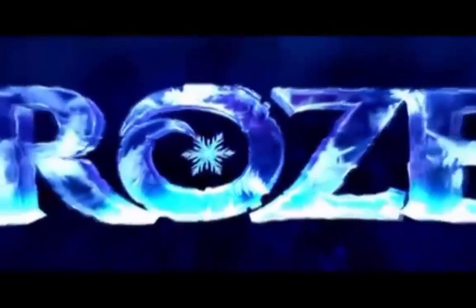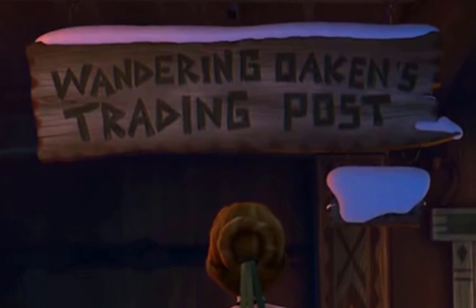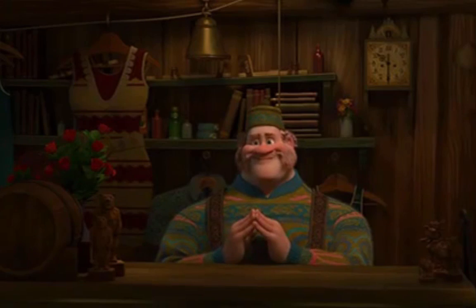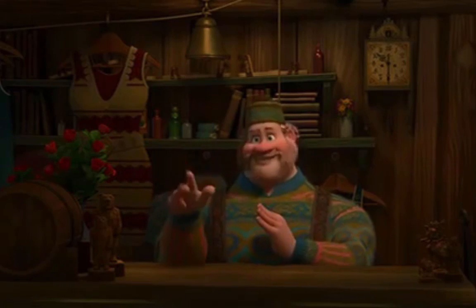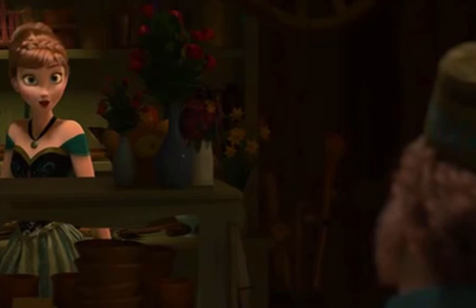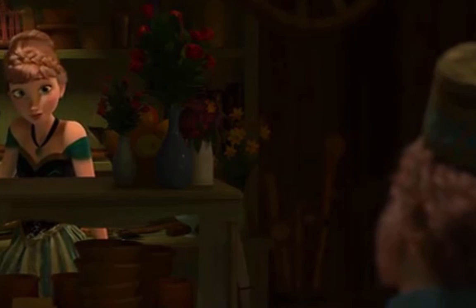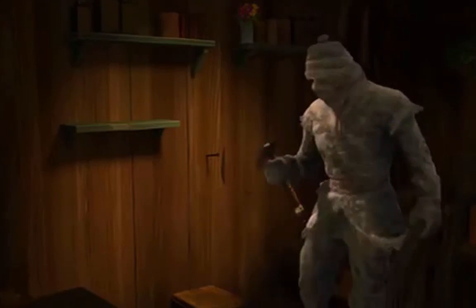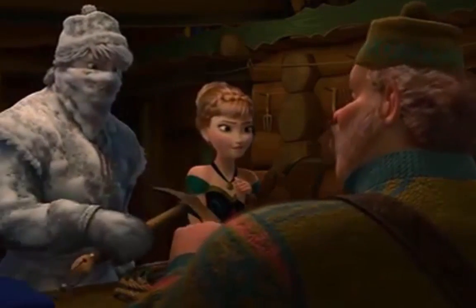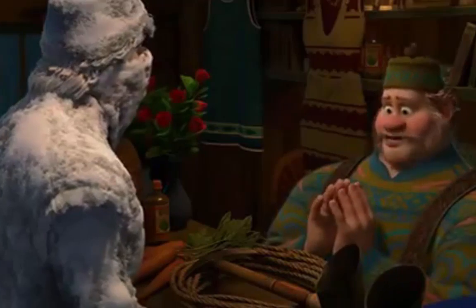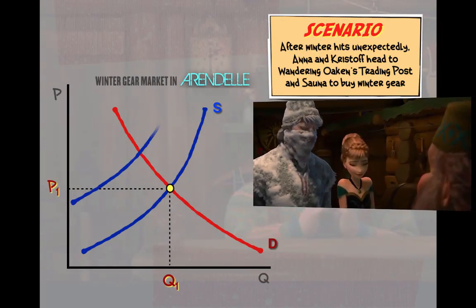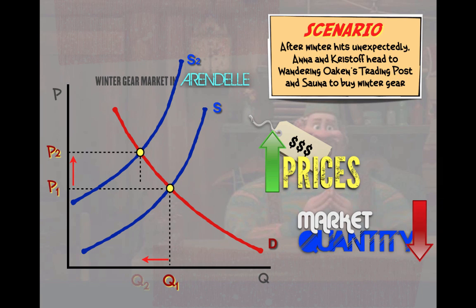You've also seen supply and demand in Frozen. After winter hits, both Anna and Kristoff head into Wandering Oaken's trading post and sauna to buy winter gear. The outpost was unprepared for winter because it's supposed to be the middle of summer, and as a result, there's not much available. Both Anna and Kristoff are shocked by the incredibly high prices they're going to have to pay. Oaken states the reason himself: supply and demand. What's happened here is that the trading post has a decreased supply of winter gear, causing the prices of them to increase and the quantity sold on the market to decrease.